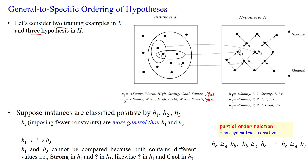So here first we are having the two training examples: sunny, warm, high, strong, cool, same. The target concept C of X is yes, and X2 is also a positive example.